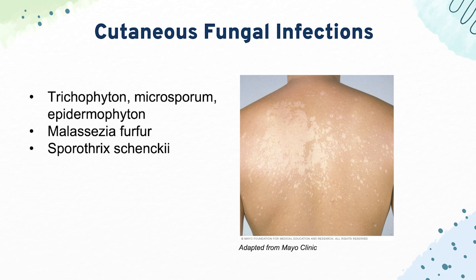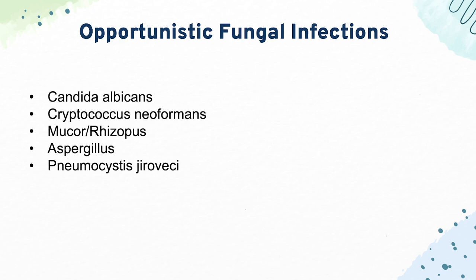Next, we have Candida albicans, which causes thrush in the immunocompromised — you can often see a white film in the patient's mouth. It can also cause diaper rash and endocarditis in IV drug users. The treatment is nystatin, azoles, or if systemic, amphotericin B.